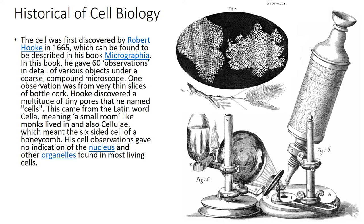In this book, he gave 16 detailed observations of various objects under a coarse compound microscope. One observation was from very thin slices of bottle cork, where he discovered a multitude of tiny pores that he named cells. This came from the Latin word 'cella', meaning a small room like a monk lived in.